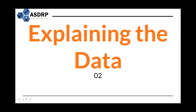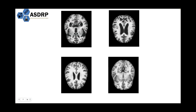Now we'll explain the data. Here are four images of MRI scans in different stages. As you can see, there's moderately demented, mildly demented, non-demented, and partially demented.